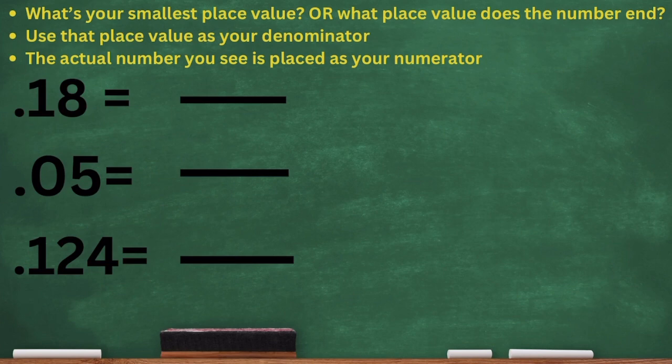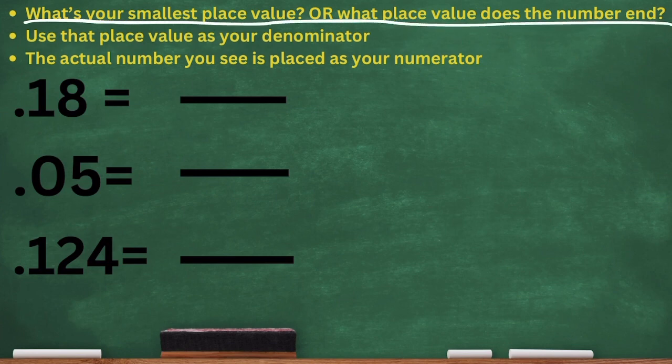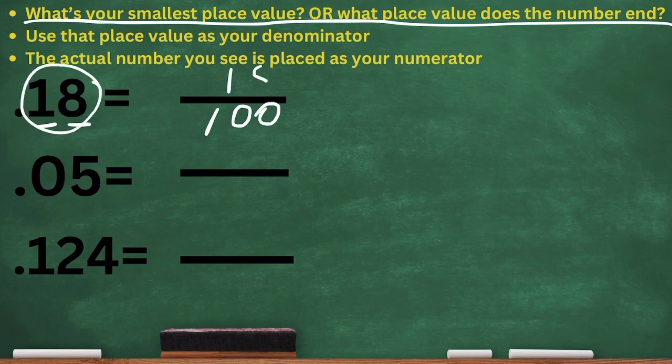Okay, so the first number we have at the top is 0.18, or eighteen hundredths. We have to ask ourselves, what's the smallest place value or what place value does the number end? We have a one and an eight. That number ends at eight, which is the hundredths place. So that's why I place 100 as my denominator. Take the actual number 18 and place it as my numerator. And there you have it.